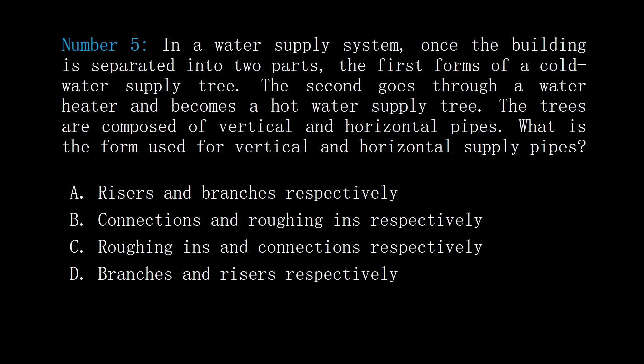Number 5. In a water supply system, once a building is separated into two parts of the water supply tree, the first forms a cold water supply tree and the second goes through a water heater and becomes a hot water supply tree. The trees are composed of vertical and horizontal pipes. What is the term used for vertical and horizontal supply pipes? A: risers and branches respectively. B: connections and roughing ends respectively. C: roughing ends and connections respectively. D: branches and risers respectively. Answer: D, branches and risers respectively.